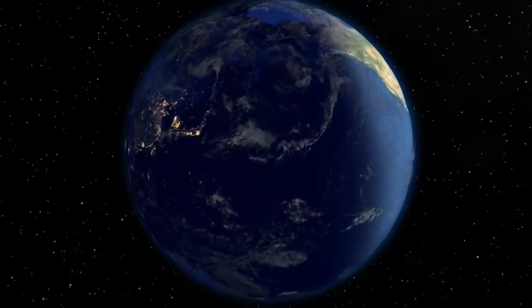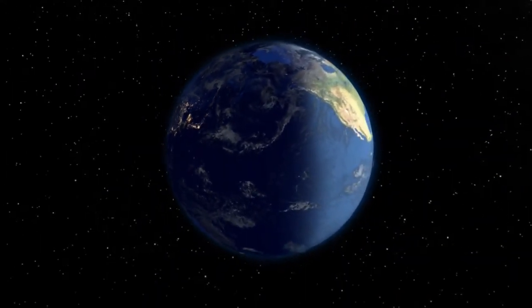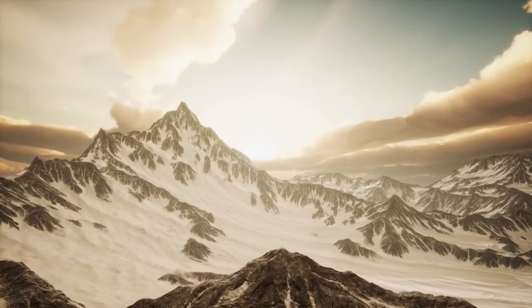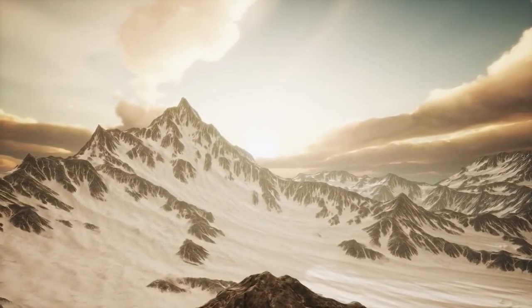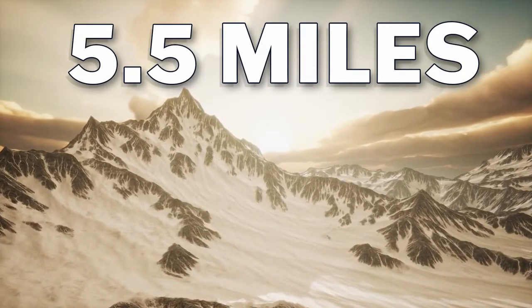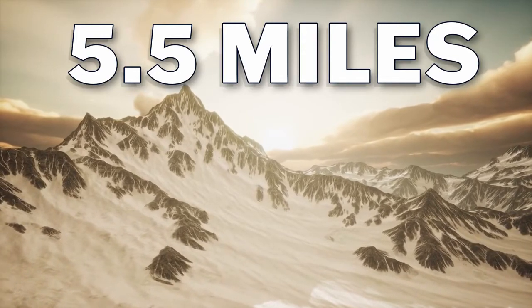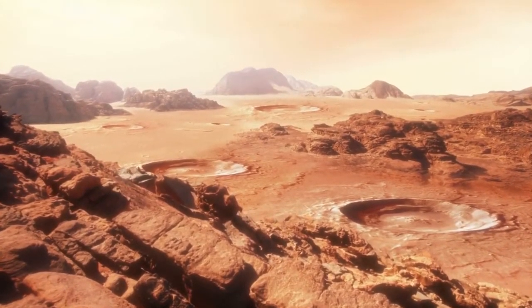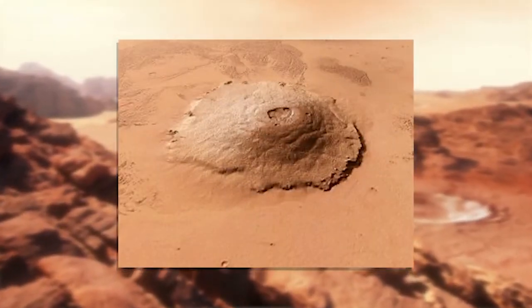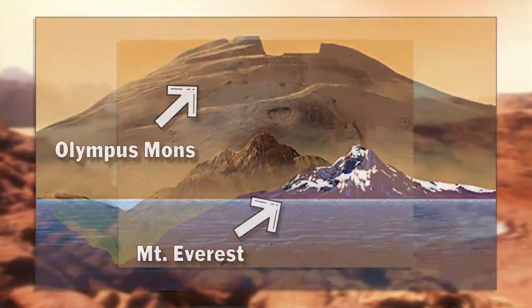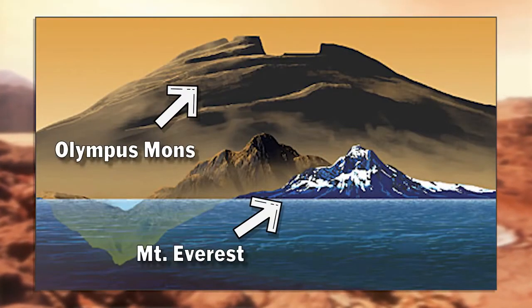But why limit ourselves to the only rock we've called home? The solar system is home to some pretty impressive feats. The tallest point you could stand on Earth would be atop Mount Everest. At nearly 5 and a half miles above our surface, you'd need several layers and oxygen tanks just to survive a few minutes. But on Mars, thanks to a lack of tectonic plates and no molten planet core, Olympus Mons tops out 16 miles above the surface of the red planet, and covers an area nearly the size of France, making it the biggest mountain in our solar system.